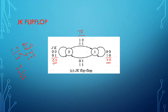If the present state is 1 and you want it to change to 0, you can reset it by giving 0,1, or you can make it toggle by giving input 1,1 — in simple terms, x1. This is the transition diagram of the JK flip-flop, which explains how the transition will happen from one state to another and what possible input combinations can be given.